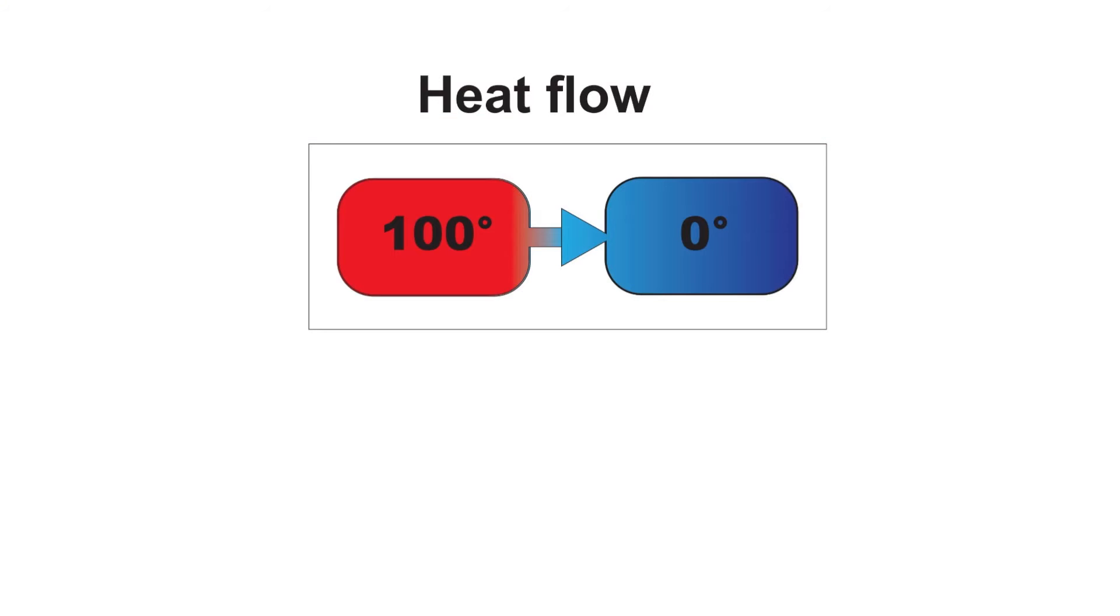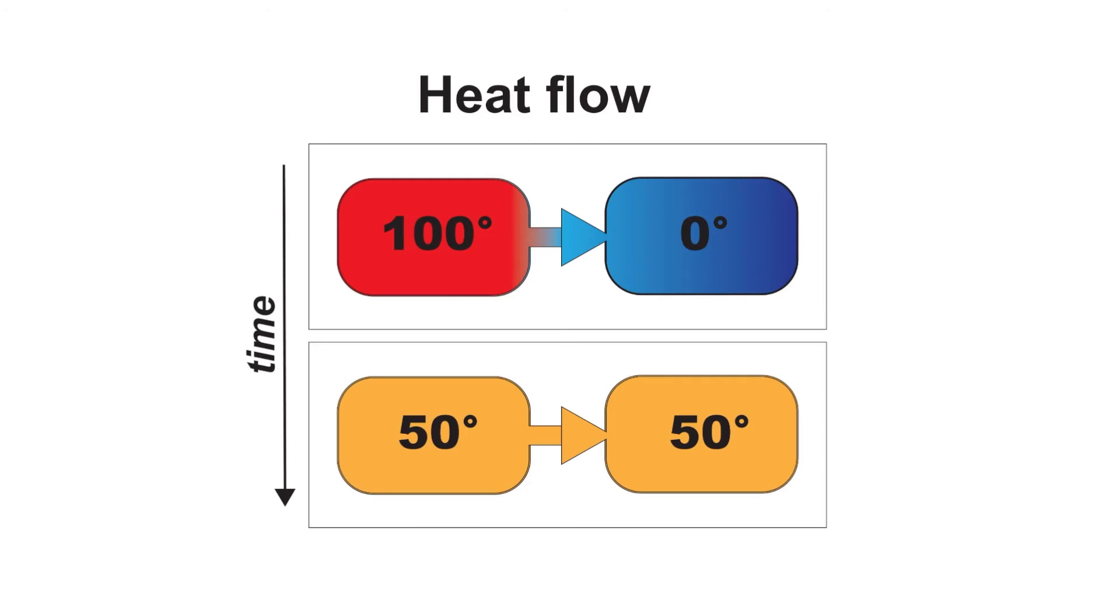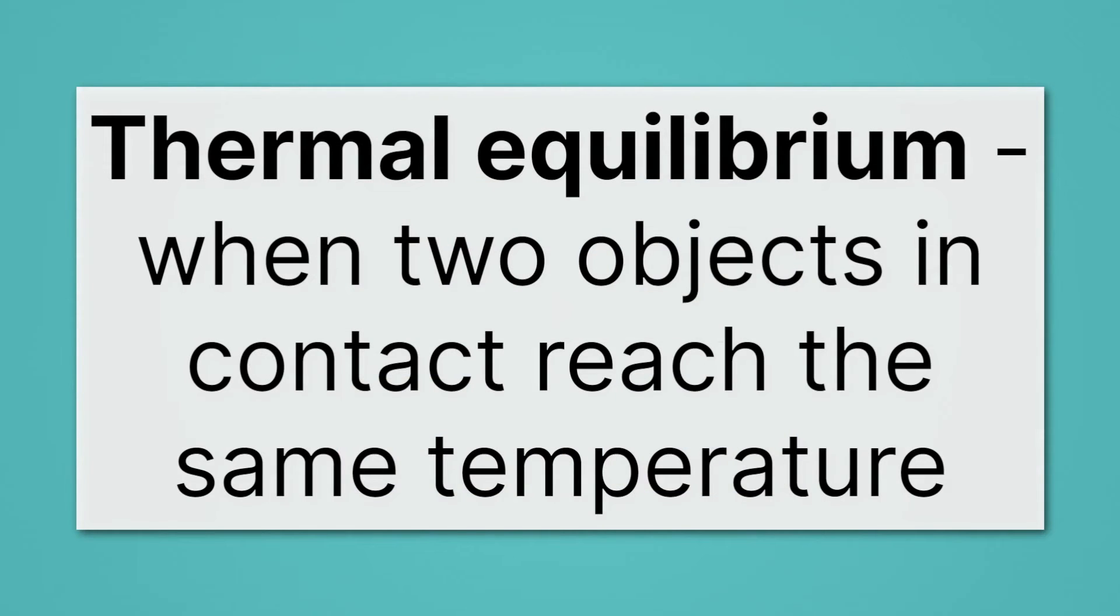So, for example, say we have heat flowing from something that's 100 degrees to something that's 0 degrees. As time goes on, what's going to happen? Well, the cold is going to warm up and the hot is going to cool down until they're both 50 degrees Celsius. We call this thermal equilibrium. Thermal equilibrium is when two objects in contact reach the same temperature.